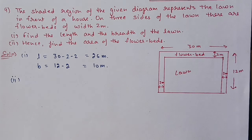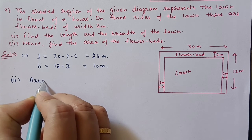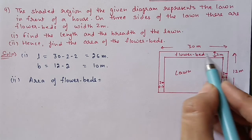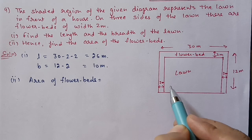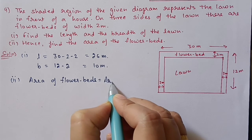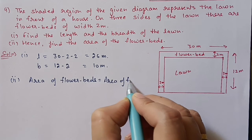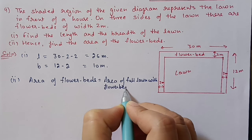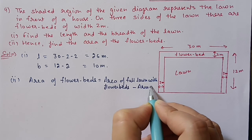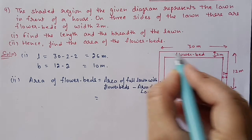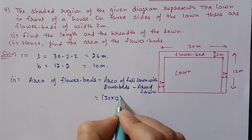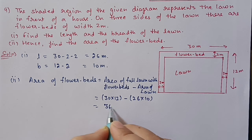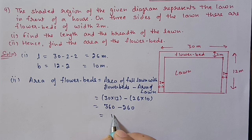Now we find the area of the flower bed. Area of flower bed equals area of the full big rectangle minus area of the lawn: 30 times 12 minus 26 times 10, which equals 360 minus 260 equals 100 square meters.